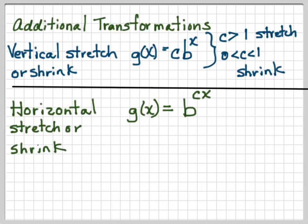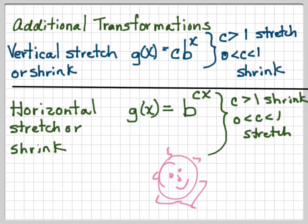A horizontal stretch, g of x is going to be b to the c times x. This time we're going to multiply our exponent by a constant. And if c is greater than 1, it will shrink. And if c is between 0 and 1, it will stretch. Please notice that that's kind of backwards from what it is for the vertical stretch. And it's because we're working with the x component.